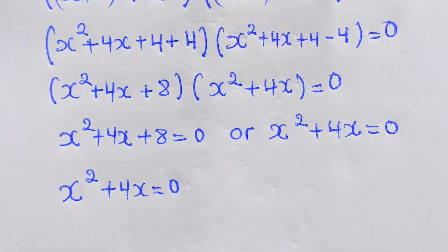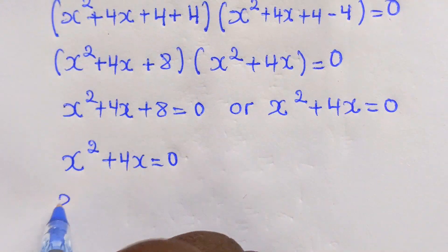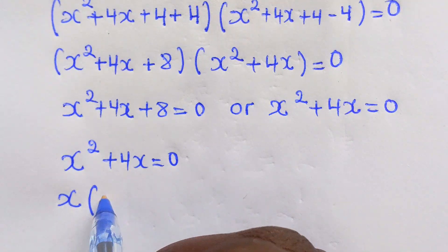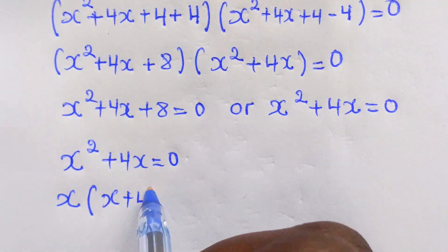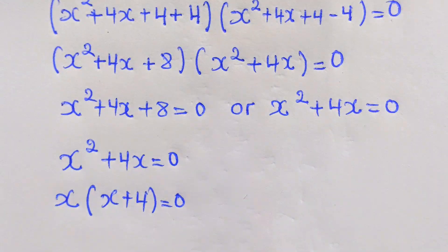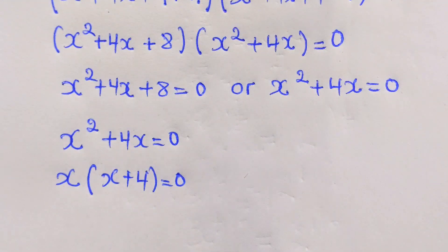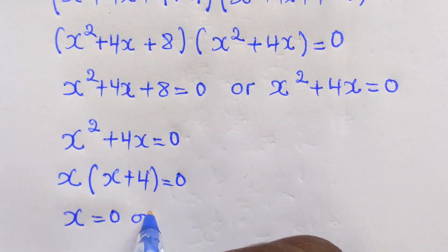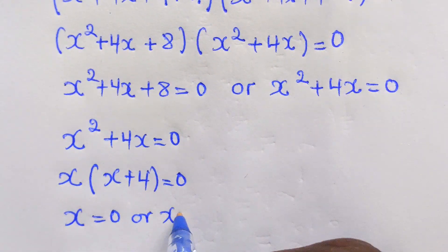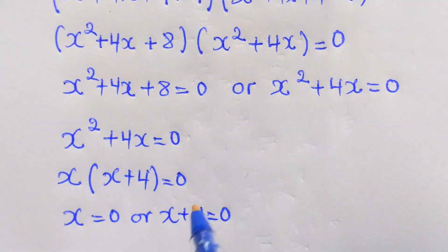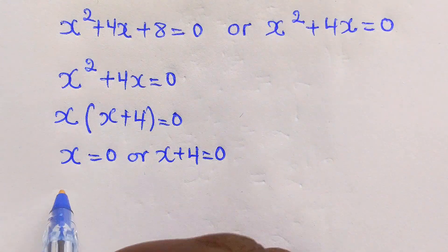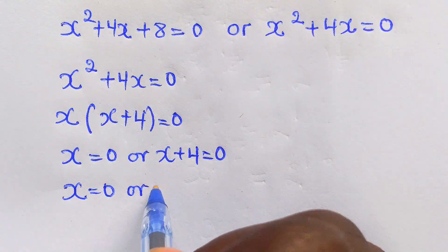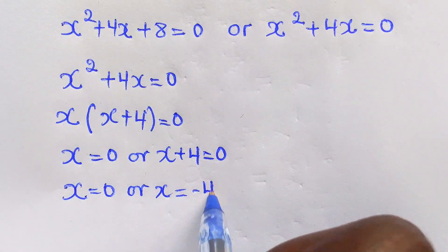Let's start with x squared plus 4x equal to zero. We factorize x out to get x times bracket x plus 4 close bracket equal to zero. From this, x equals 0, or x plus 4 equals 0, giving x equals 0 or x equals negative 4.